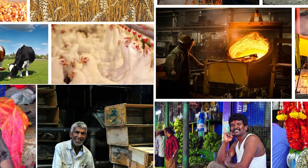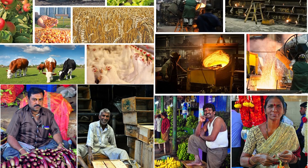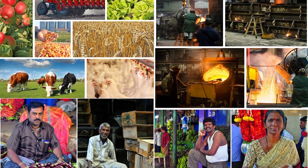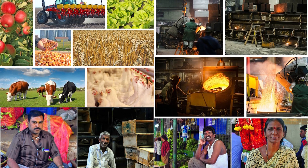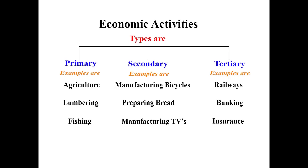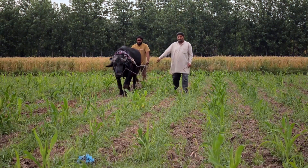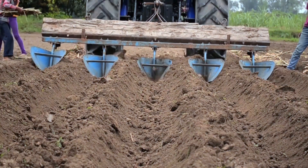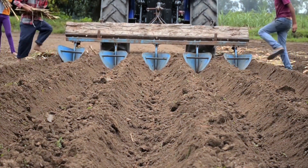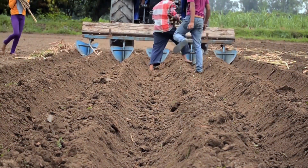The teacher concludes: students now have a clear understanding of economic activities and their types — primary activities, secondary activities and tertiary activities. They also understand the features of agriculture as a primary activity. In the next episode, we will learn about the factors influencing agriculture and why it is considered as a system.